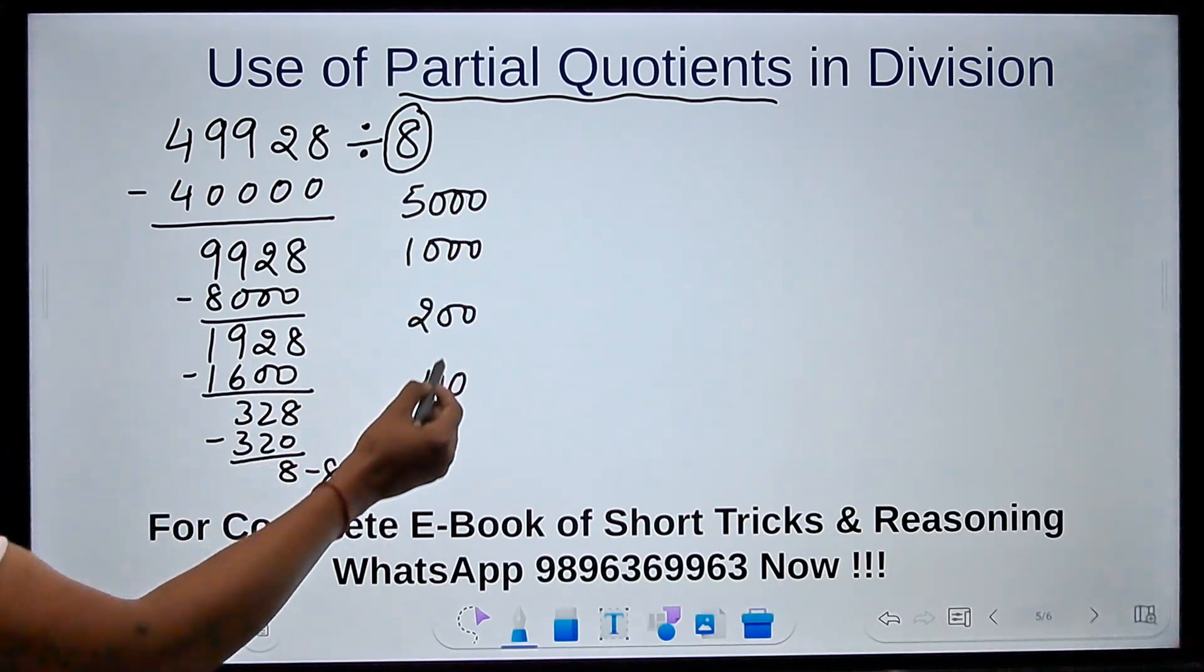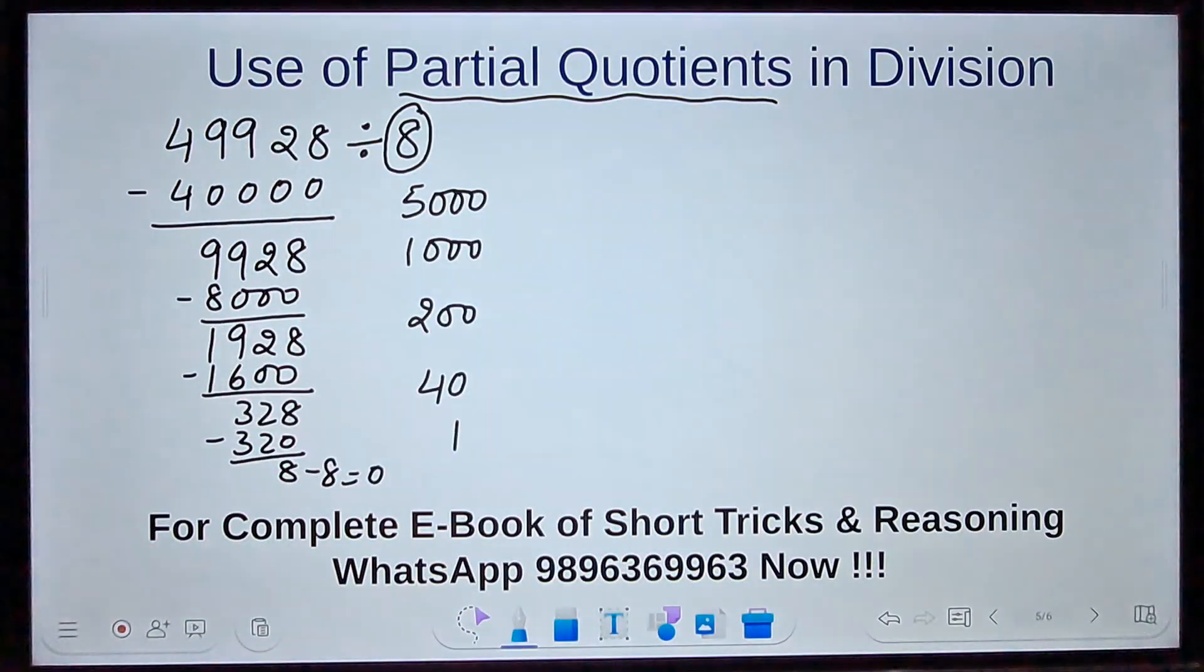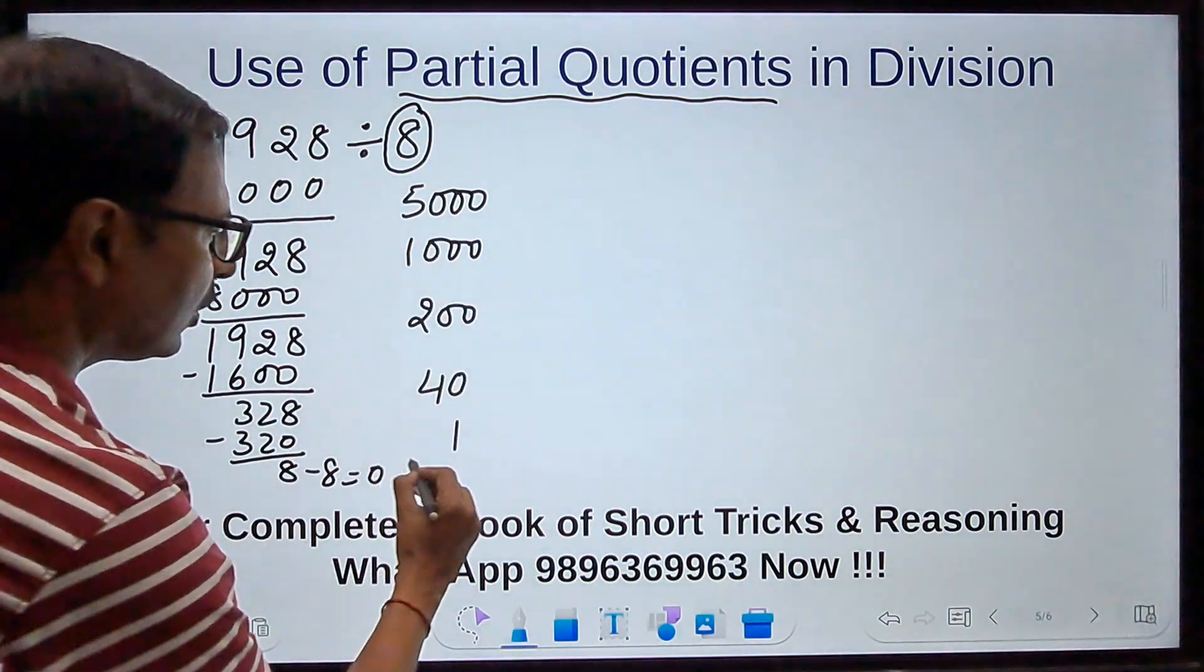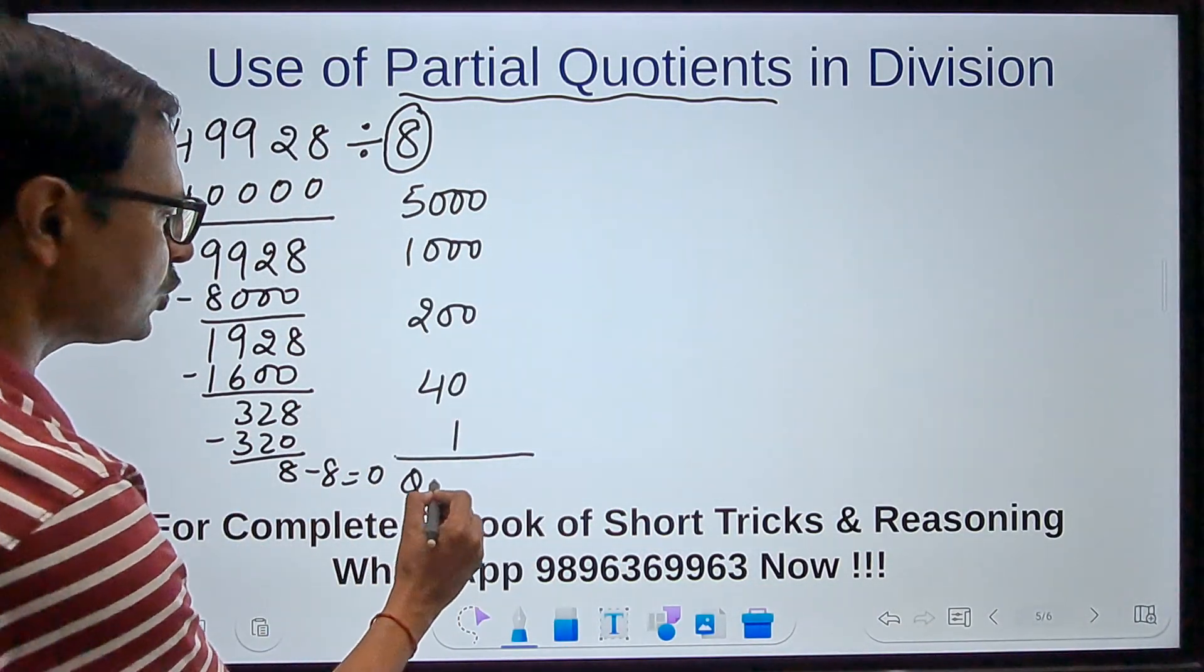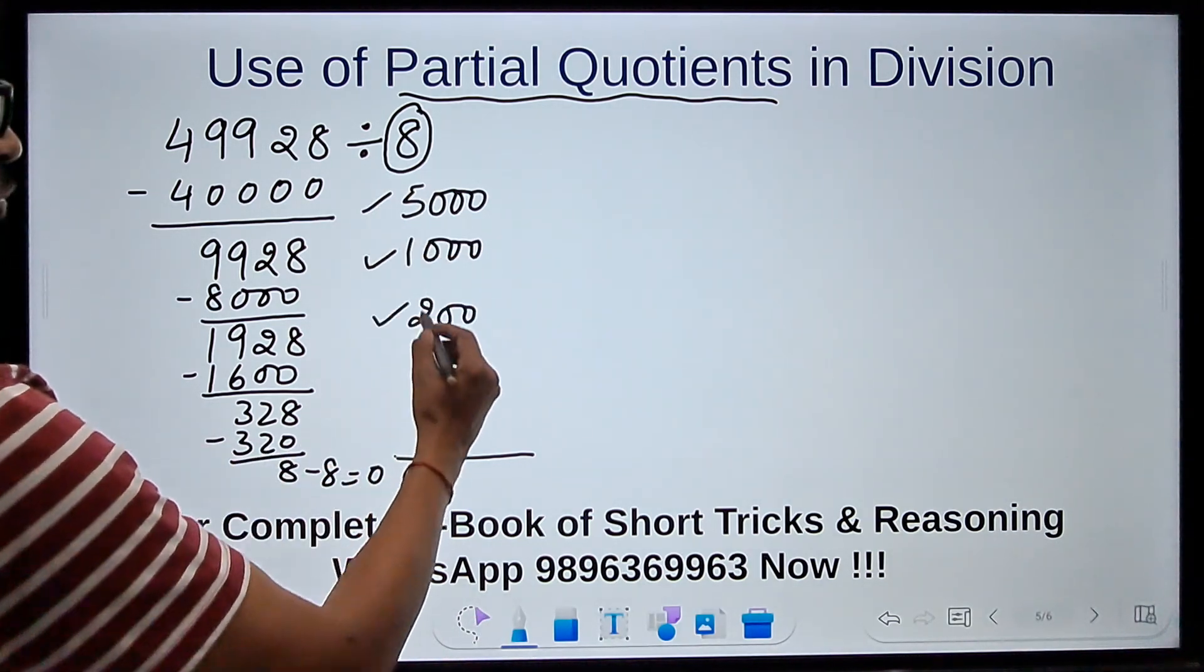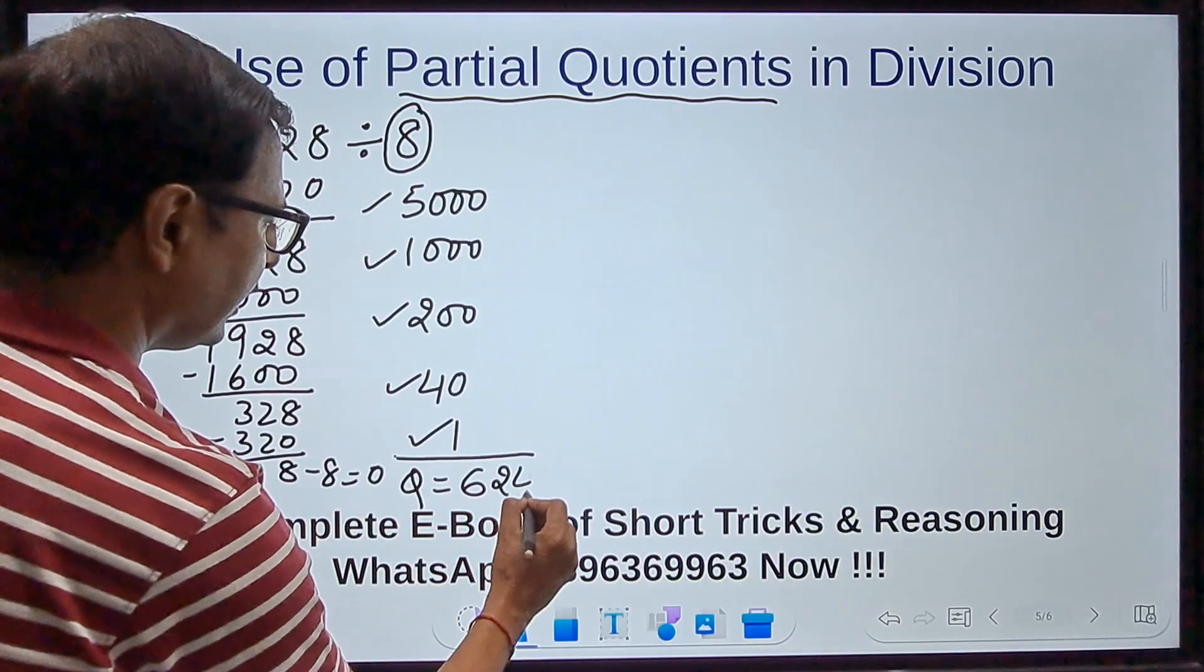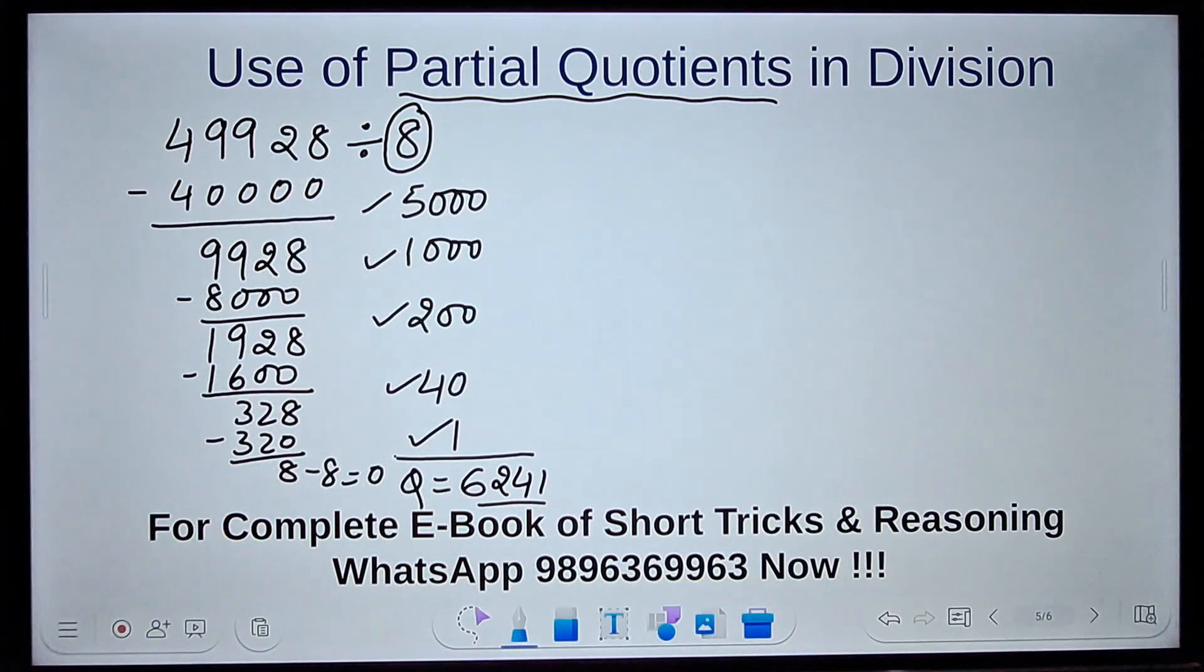So all these quotients which I have written here, they are known as partial quotients. If I add all of them, my final quotient will be 5000, 6000, 6200, 6241. Now you can pick up the calculator and check: 49928 divided by 8 is 6241, and you will be surprised that the result is very accurate.